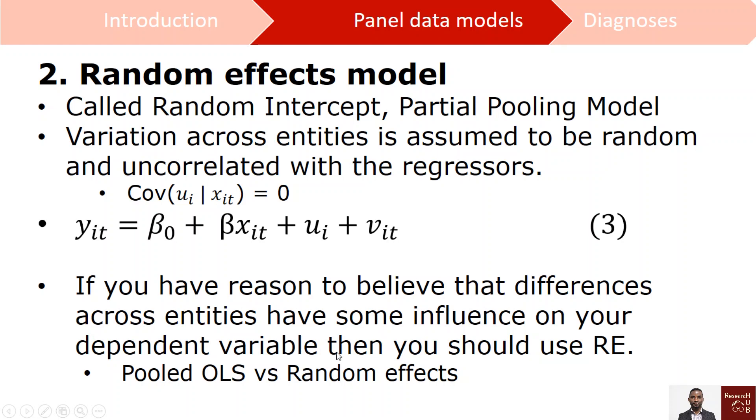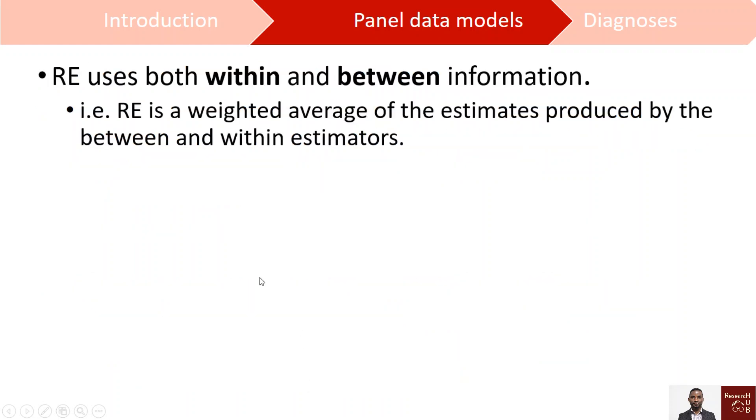Random effect uses both within and between information. What it means is that within the panel we did, each individual for some years, the panel data random effect uses all the information. For example from year one to year seven, the panel data random effect will use all this available information.